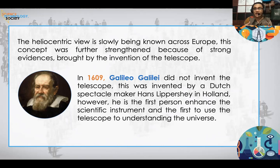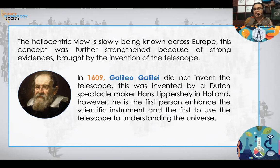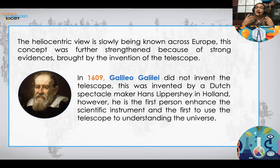In 1609, Galileo Galilei improved the telescope, multiplying magnification by 15 and then by 30. Galileo Galilei did not invent the telescope — it was invented by a Dutch spectacle maker named Hans Lippershey from Holland. Galileo was the first to reinvent and enhance the telescope for use in studying the universe — he is the first person to use the telescope to study space.